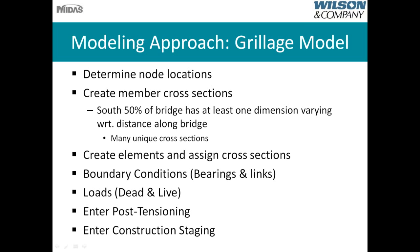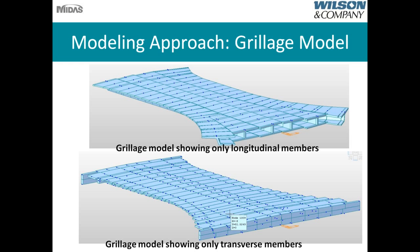The modeling approach for the grillage model: first, determine node locations; next, create member cross-sections — noting that the south half of the bridge has at least one dimension varying with distance, resulting in many unique cross-sections. Then create elements and assign cross-sections. Next, put boundary conditions in place: point springs for the bearings and rigid links to connect the two exterior webs together at the bifurcation, and to connect the top and bottom slab for the transverse elements. Finally, input loads, post-tensioning, and construction staging for time-dependent effects.